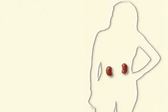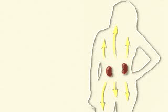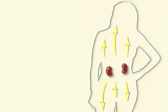Parathyroid hormone also causes the kidneys to conserve calcium ions and increase the excretion of phosphate ions. Thus, the net effect of parathyroid hormone is to increase calcium ion concentration of the extracellular fluids while maintaining normal phosphate ion concentrations.